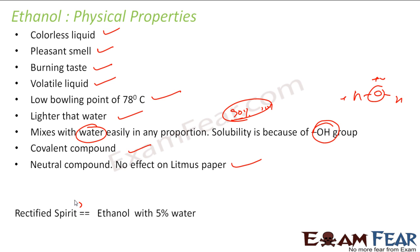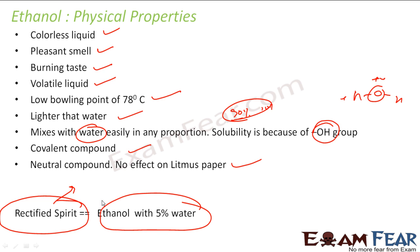There is something called rectified spirit, which is used a lot in industry. It is nothing but ethanol with 5 percent water — that means 95 percent ethanol and 5 percent water. This is used extensively in industry.